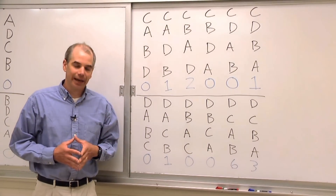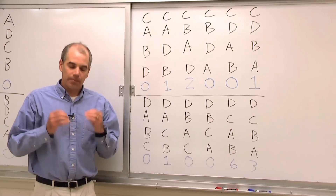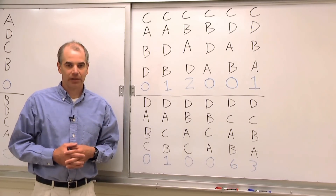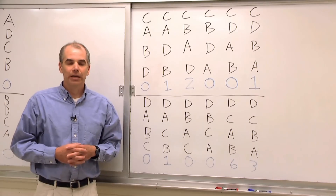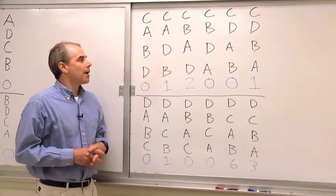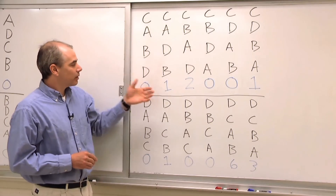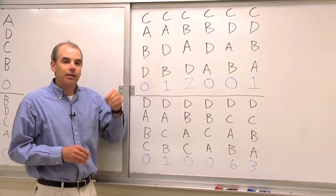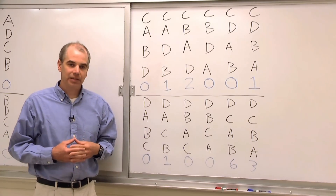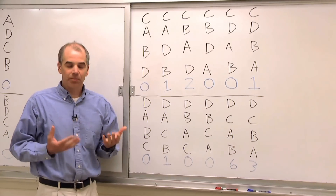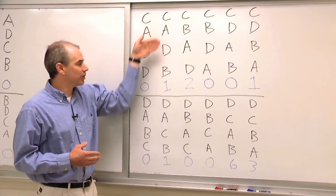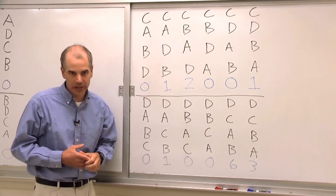One of the most common methods of deciding the election is called plurality, and plurality is very simple. All you do is take each person's first choice, and the candidate who has the most first place votes wins. In fact, most of the time the voter only indicates their first choice — they wouldn't rank the candidates, they would just say, I like C the best, for example.